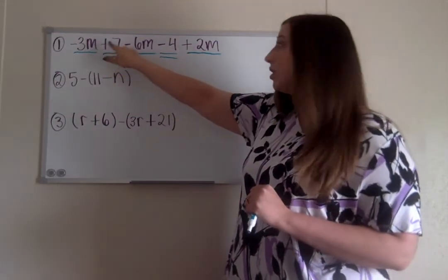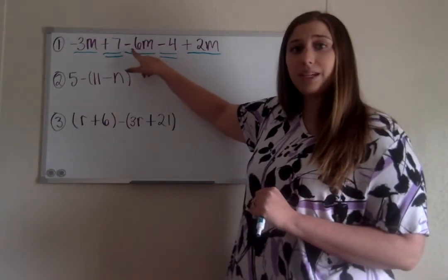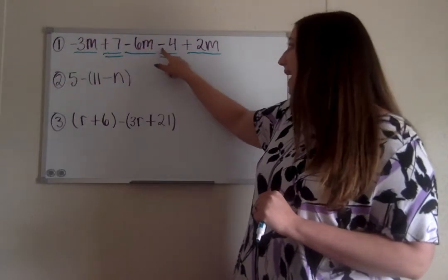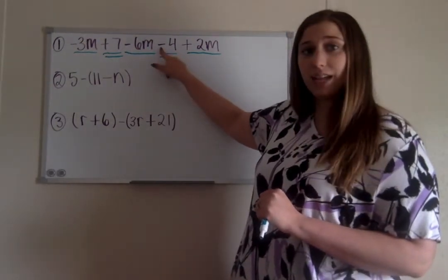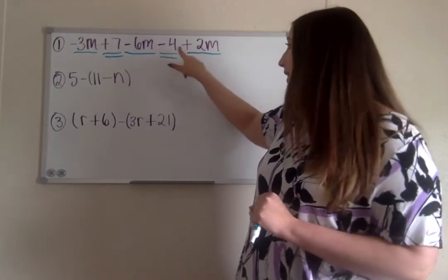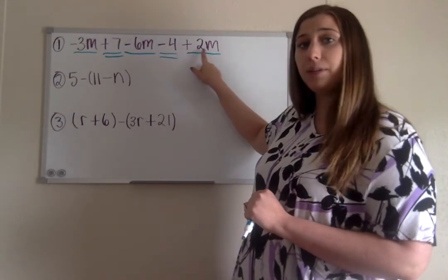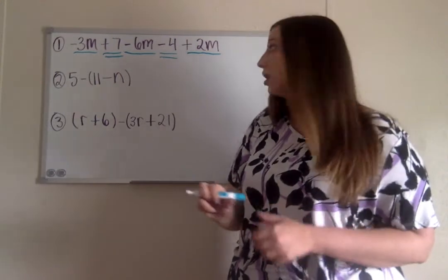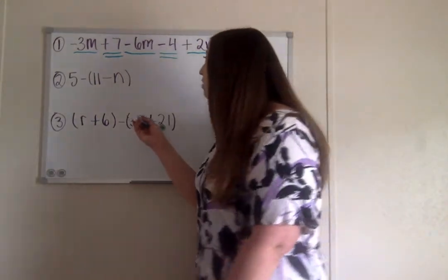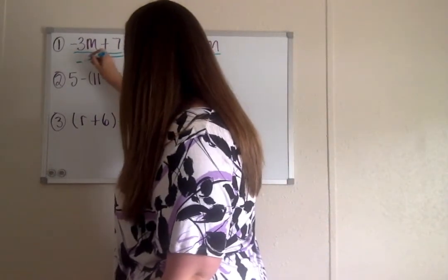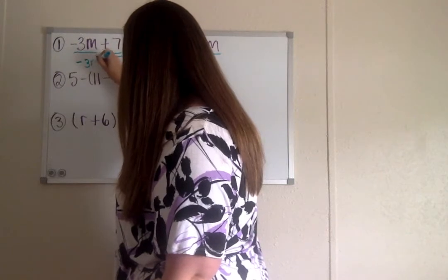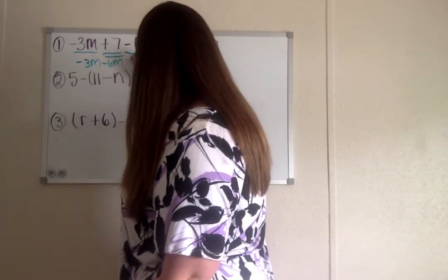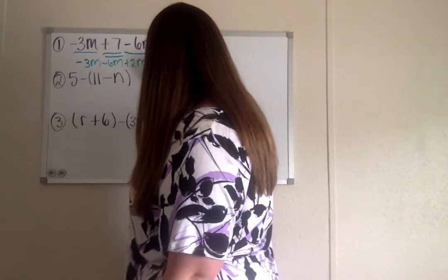So notice how here I said this is a positive 7 because there's a plus in it. I said this is a negative 6m because there's a negative in front of the term. This is a negative 4 again because there's a negative in front of it, and this last one is a positive 2m again because it's a plus sign, it's telling us it's positive. So when we rework this out, what we're gonna do is we're gonna combine those like terms of negative 3m minus 6m plus 2m.